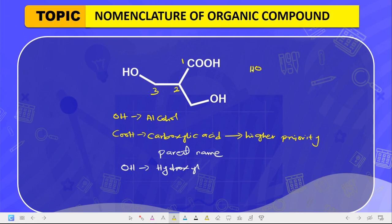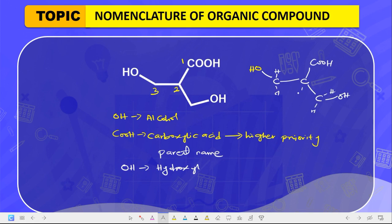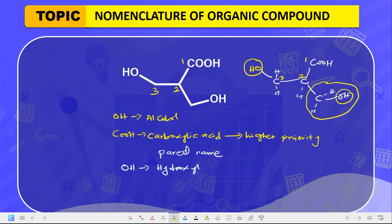Breaking down the compound: we have the OH group here, then a carbon atom bonded to another carbon, then bonded to the COOH group. We also have a carbon bonded to OH and two hydrogens. In skeletal form: carbon one, carbon two, carbon three. This means we have two substituents — the OH on one carbon, and another branch coming off the chain as a separate substituent.